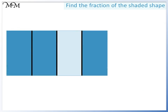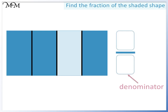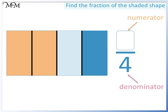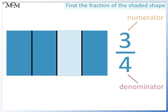Here's another example. Again, we'll start with the denominator — the total number of parts. We have one, two, three, four parts in total. The denominator is four. Next we'll find the numerator — this is the number of parts that have been shaded in. One, two, three. Three parts out of four have been shaded in. So the fraction is three quarters.